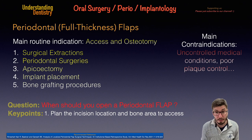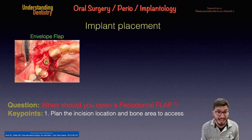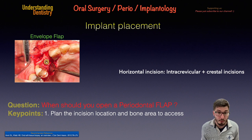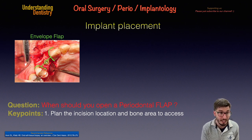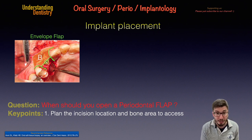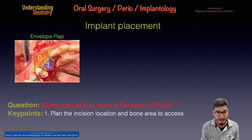The first key point is to plan the location of your incision, which will be related to the area of bone you want to access. You are now seeing a flap composed of a horizontal incision only, with no releasing incisions — the envelope flap. The location of my incision is shown in green, and this allows me to expose the area buccal to the incision, marked with the letter B, and the area palatal to my incision.